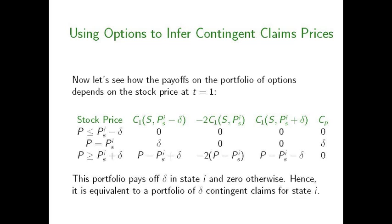Now suppose state i actually comes about at time T equals one, so the value of the portfolio equals PSI. In this case, the call purchased with strike price PSI minus delta has value delta — it allows you to buy the entire portfolio at PSI minus delta and sell it for PSI, pocketing the difference delta. The two other calls — the one you've written with strike price PSI and the one you've purchased with strike price PSI plus delta — expire out of the money in state i. So the total payout from this portfolio equals delta.